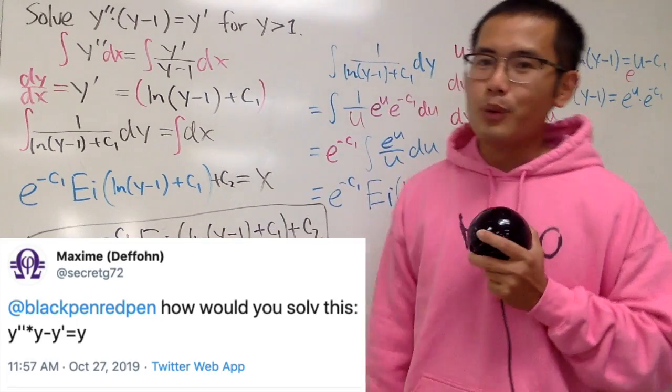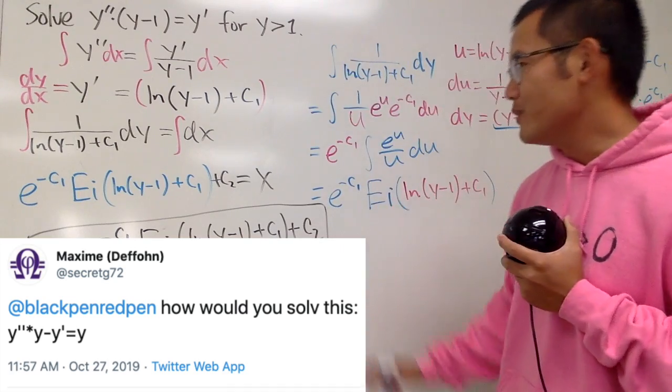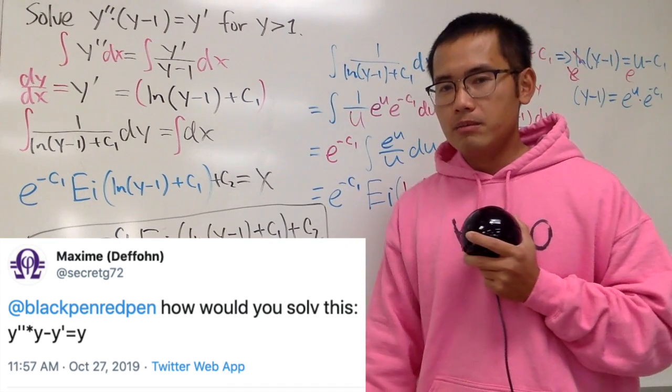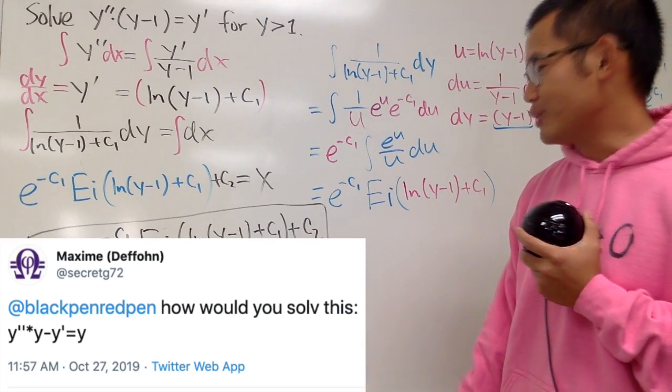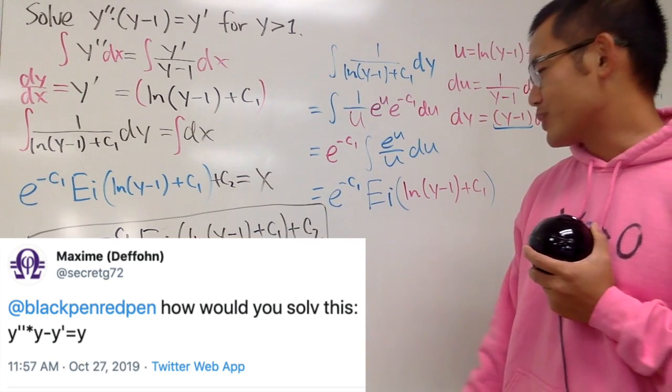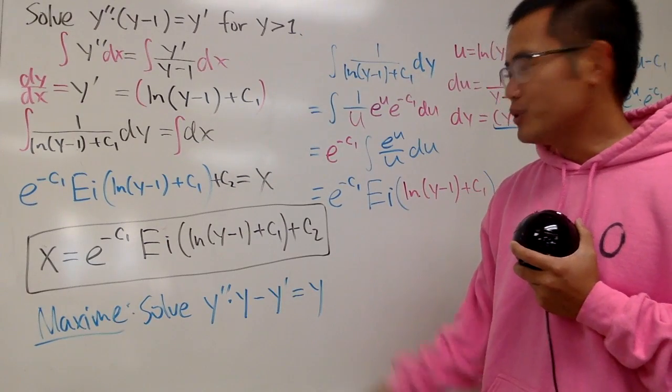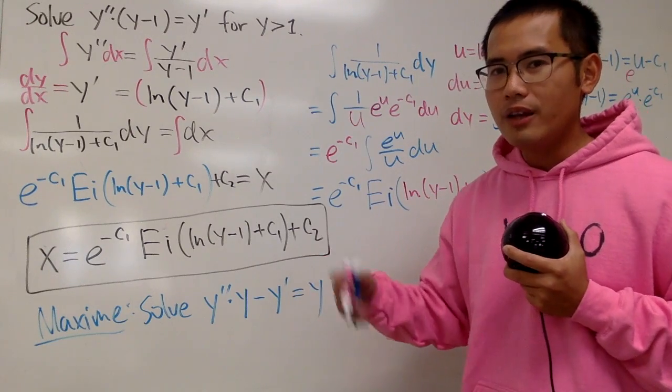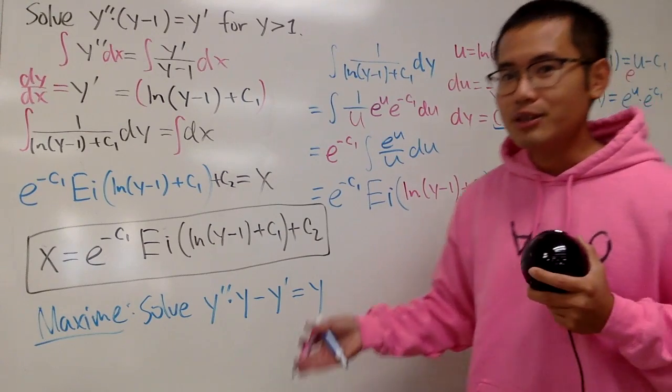But, this is not his original question. His original question is this. But the problem is that if you try to use a similar technique, it won't work. Because, it just won't. You can try if you isolate the y double prime and you will just end up with that y prime is equal to ln of y plus x. Something like that. And, just doesn't work.